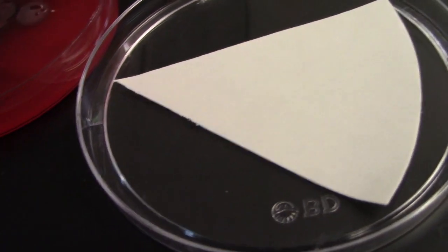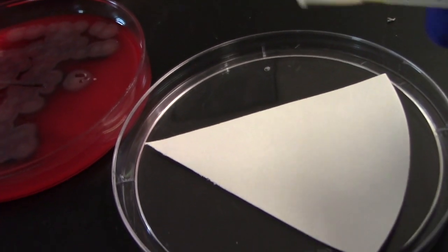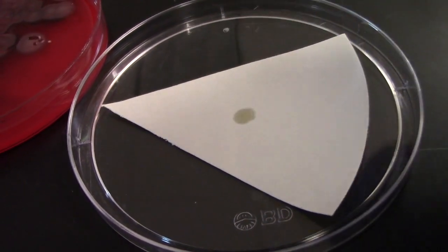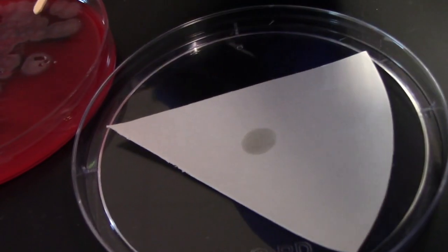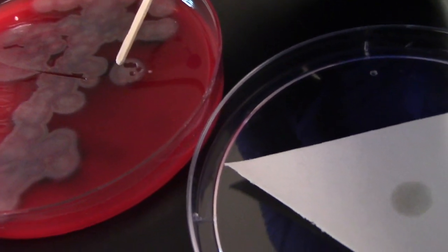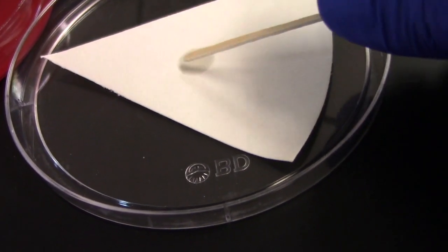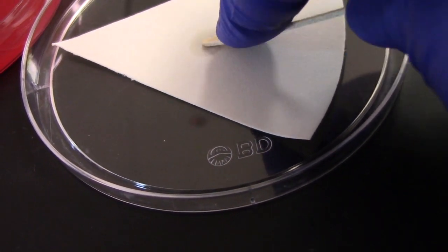We're going to test our other isolate with the same spot indole reagent. Again, on a piece of filter paper. Drop a drop of the reagent, obtain a small amount of colony with a non-sterile stick, and smear it onto the area of the drop.